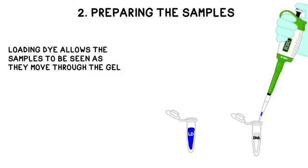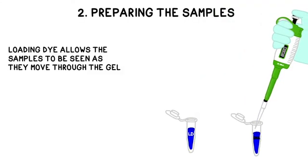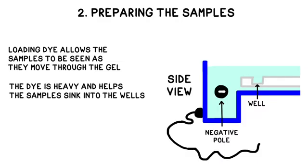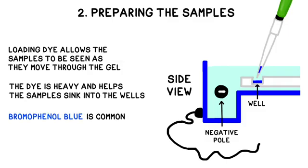Preparing the samples involves adding dye. DNA is clear, and so is the gel, and the dye helps you to see how quickly your samples are progressing in real time. The dye is also heavy, and it helps the samples to settle into the bottom of the wells, rather than taking a shortcut and floating out over the top. The most common type of loading dye is called bromophenol blue.